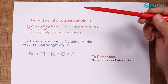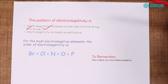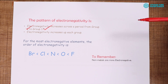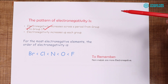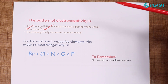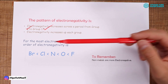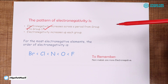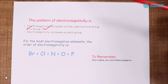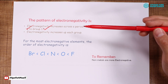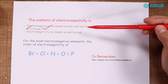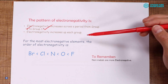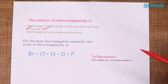As we go from left to right, electronegativity increases in a period. So electronegativity increases from left to right in the periodic table, or decreases from right to left. We can also say that electronegativity increases up each group — as we go higher in a group, the electronegativity increases.